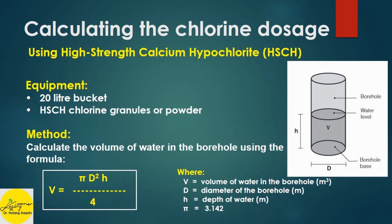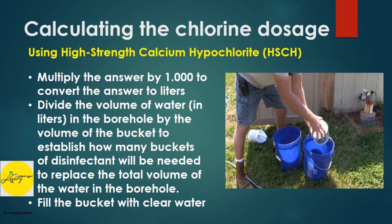Method: calculate the volume of water in the borehole using the formula V = πD²H / 4, where V is the volume of water in the borehole, D is the diameter of the borehole, H is the depth of water in meters, and π equals 3.142. Multiply the answer by 1000 to convert to liters.